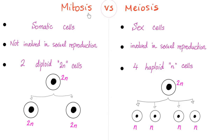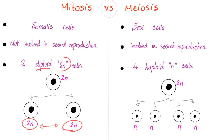Mitosis versus meiosis: mitosis is for somatic cells, meiosis is for sex cells — your gonads, your ovaries, or your testicles. Mitosis is not involved in sexual reproduction, not at all. But meiosis is involved in sexual reproduction. What is the end result of mitosis? Two diploid cells. The parent cell was 2N with 46 chromosomes, and the end result gives you two new identical cells that are also 2N, identical to the parent cell. However, in meiosis, you get four haploid 1N cells.